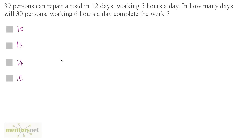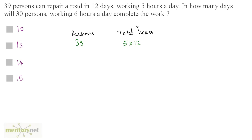39 persons can repair a road in 12 days working 5 hours a day. In how many days will 30 persons working 6 hours a day complete the work? We have the number of persons and the total hours to complete. With 39 persons working 5 hours a day for 12 days, total hours is 5 times 12. For 30 persons working 6 hours per day for x days, that is 6 times x. This is an inverse proportion because increasing the number of persons decreases the total hours to complete the work.